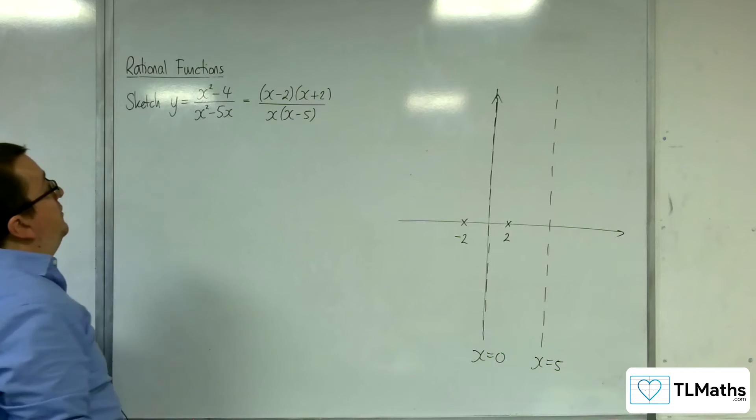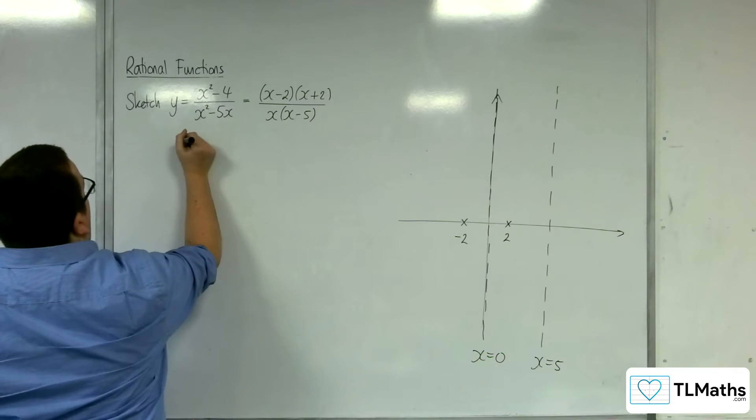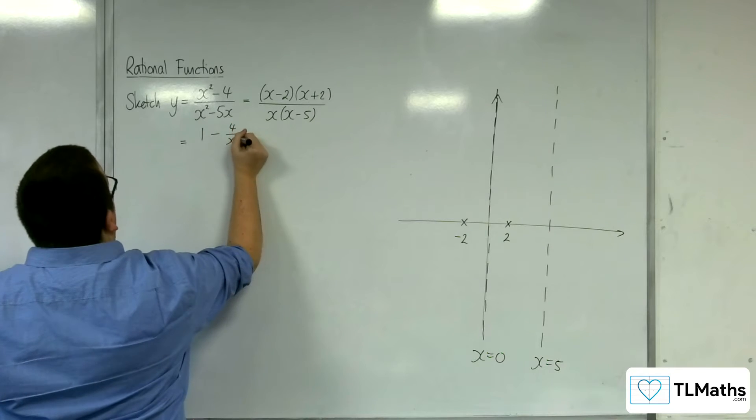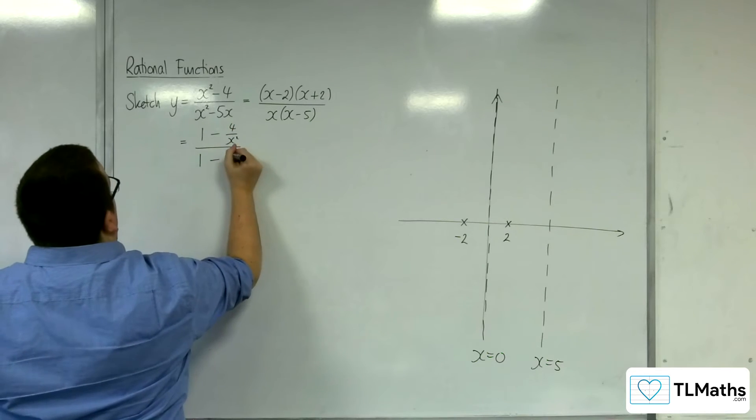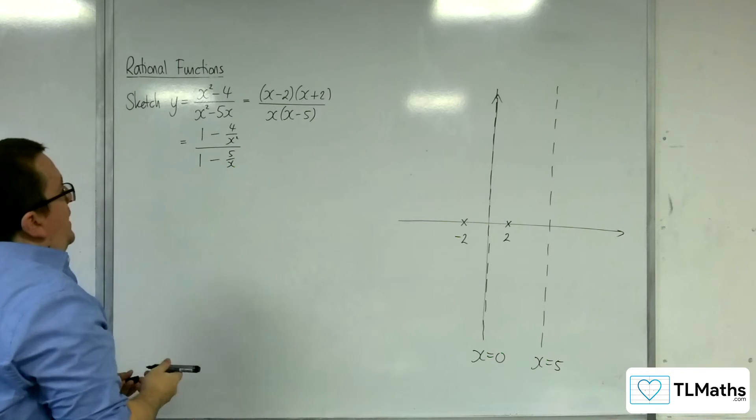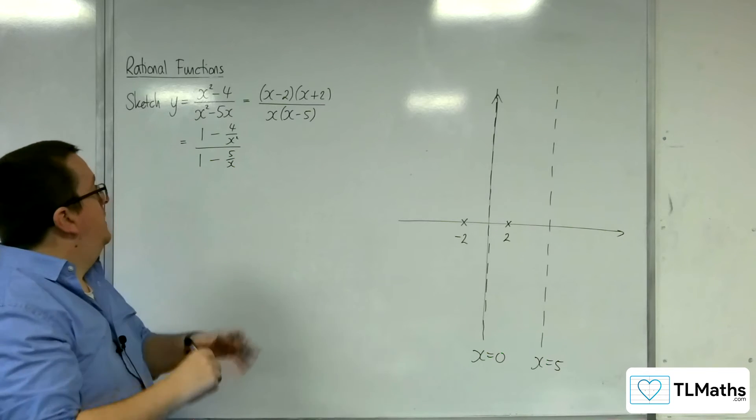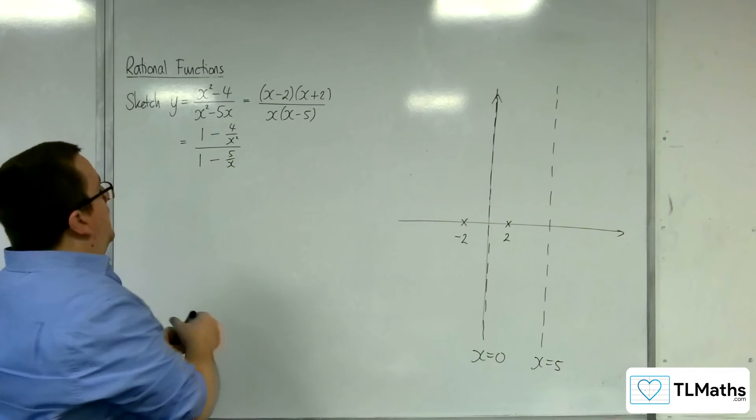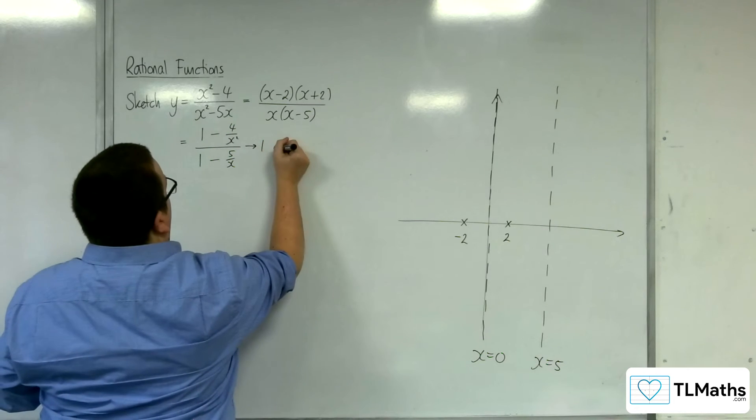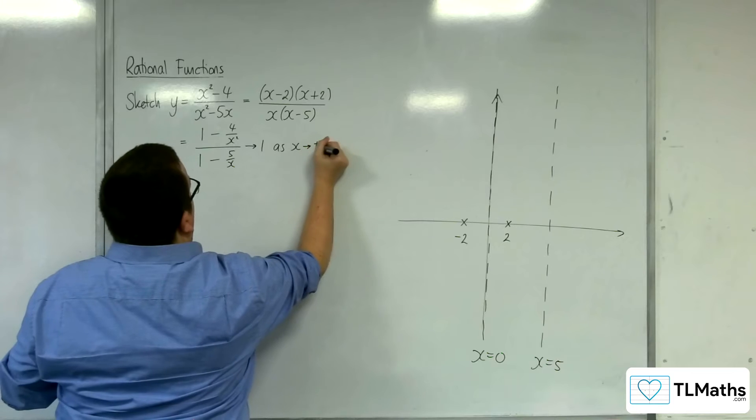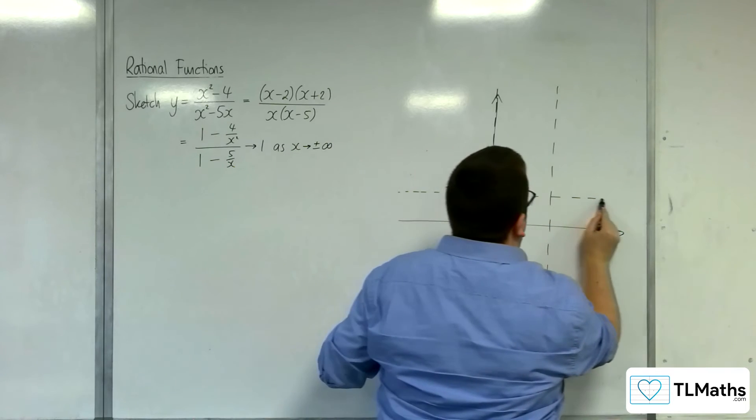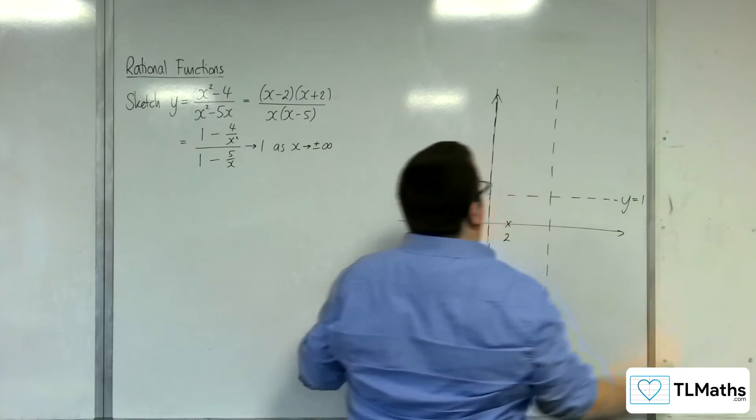How about for a horizontal asymptote? So if I divide top and bottom by x squared, I get 1 minus 4 over x squared over 1 minus 5 over x. So as x tends to positive or negative infinity, those two fractions are going to tend to 0, and we're going to tend towards 1 over 1. So this tends to 1 as x tends to positive or negative infinity. So y equals 1 will be a horizontal asymptote.